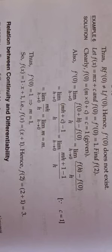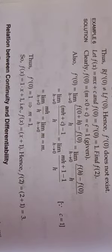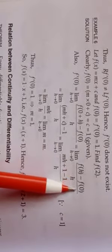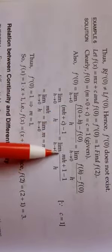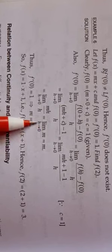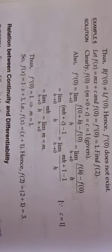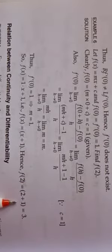Let f(x) = mx + c, and f(0) = f'(0) = 1. We have to find f(2). Clearly, f(0) = 1 means c = 1. Now f'(0) = limit h→0 of [f(h) − f(0)] / h. Calculating that, we get limit h→0 of m = m. Since f'(0) = 1, we get m = 1. So f(x) = x + 1. Putting x = 2, we get f(2) = 3.